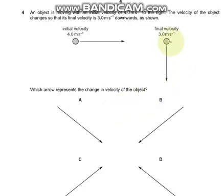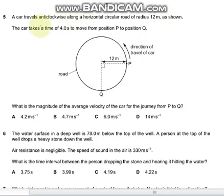If this is the resultant, then this must be the change. So this change is represented by B. Question 5 says that a car travels anticlockwise along a horizontal road of radius 12 meters as shown.